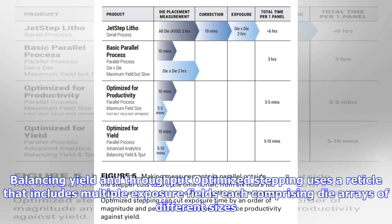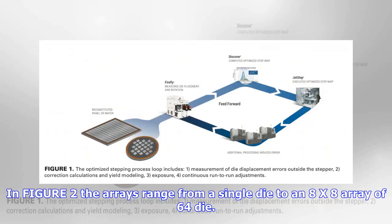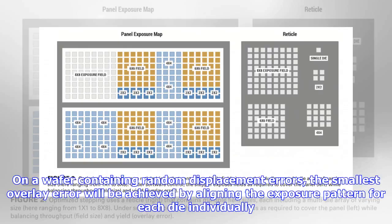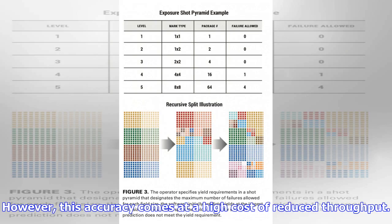Balancing yield and throughput: optimized stepping uses a reticle that includes multiple exposure fields each comprising die arrays of different sizes. In Figure 2, the arrays range from a single die to an 8 by 8 array of 64 die. On a wafer containing random displacement errors, the smallest overlay error will be achieved by aligning the exposure pattern for each die individually. However, this accuracy comes at a high cost of reduced throughput.